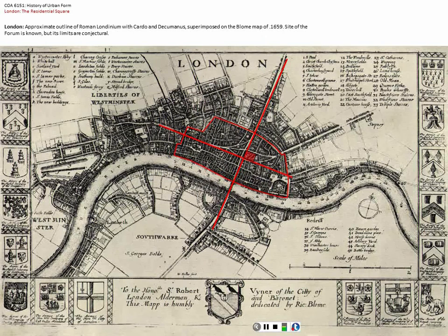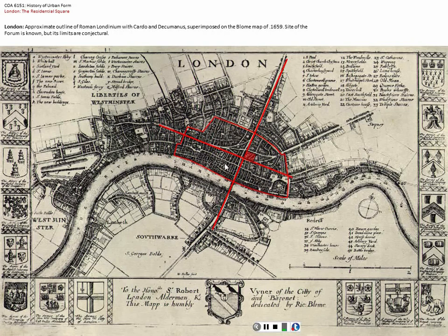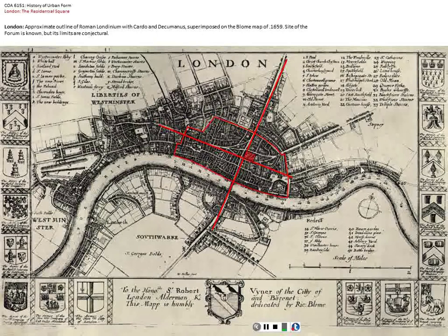It is not surprising that the Cardo and Decumanus are more or less still visible within the pattern of streets in London today. This street exiting here to the left is Oxford Street — it will be straightened out right in here. The location of the Forum is conjectural because we haven't discovered anything there yet. Here you see the Tower of London, which is a fort originally that is protecting the port. You'll notice a number of ships here — these are the docklands.